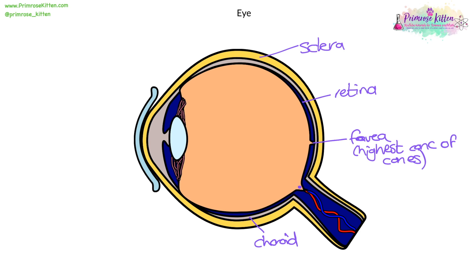The middle back of the eye, you've got something called the blind spot. Here you've got the optic nerve.